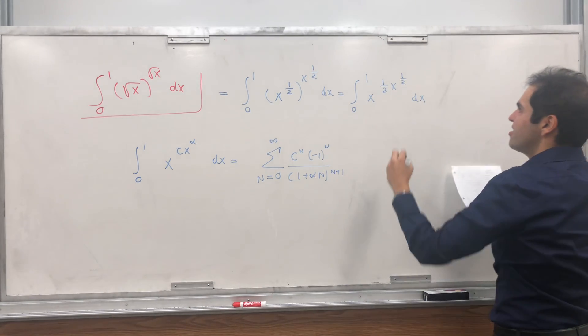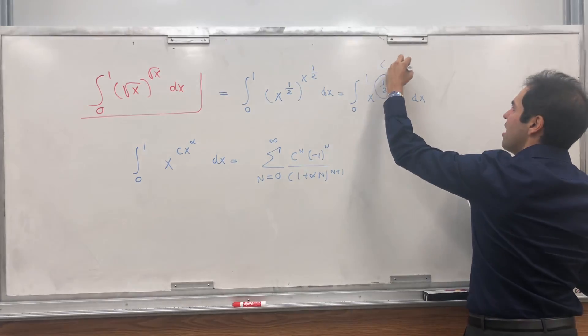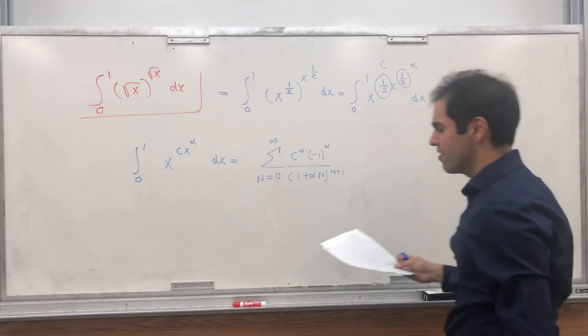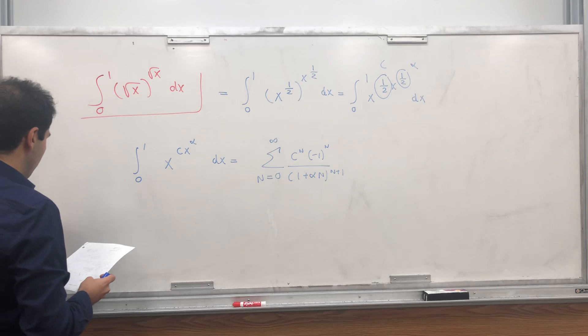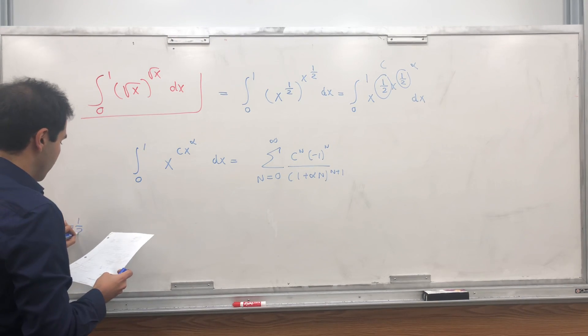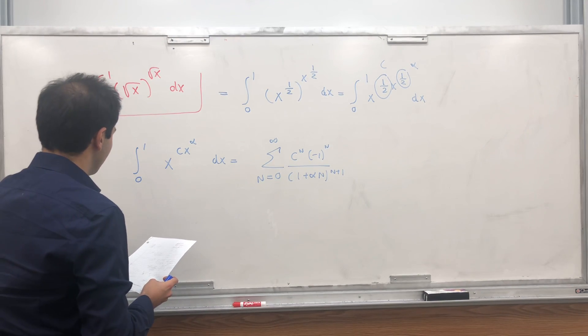In particular, c is 1 half and alpha is 1 half. So if you let c equals alpha equals 1 half, then you get this beautiful result.